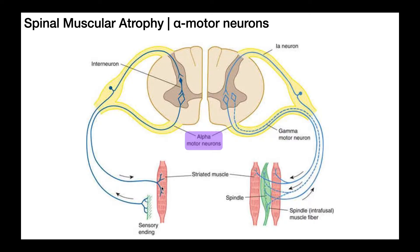Whenever you need this muscle to contract voluntarily, you need input from the central nervous system — from the premotor area and the motor cortex. That activates the alpha motor neuron, and when that alpha motor neuron becomes activated, the skeletal muscle contracts. So what might happen if this alpha motor neuron dies? Then this muscle is not going to be able to contract, since the alpha motor neuron is directly responsible for that muscle contraction.